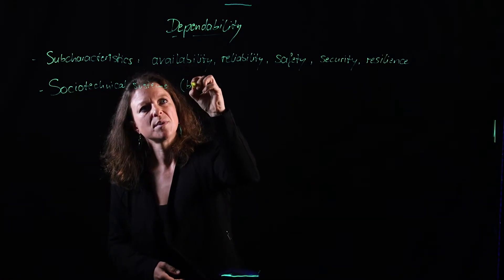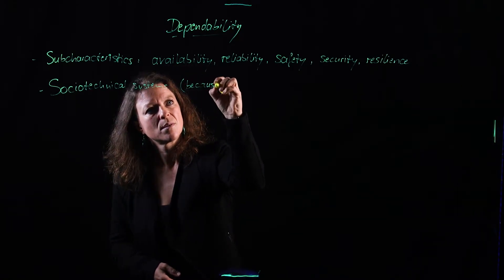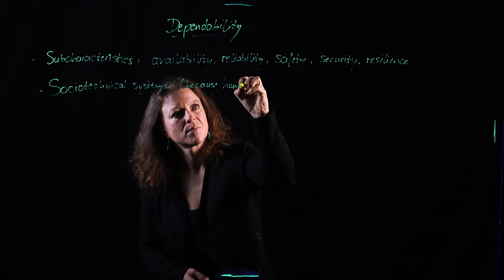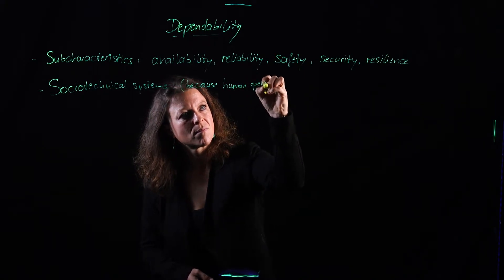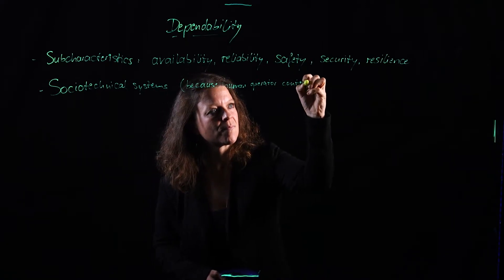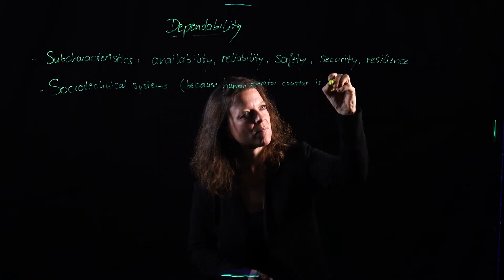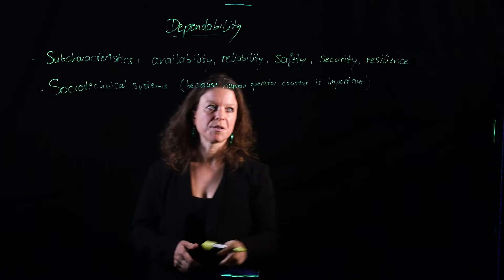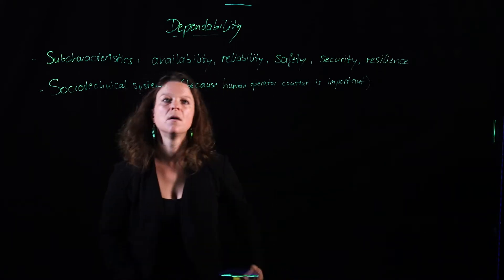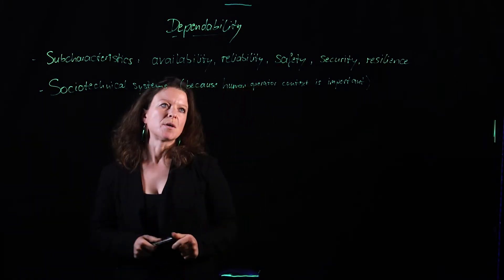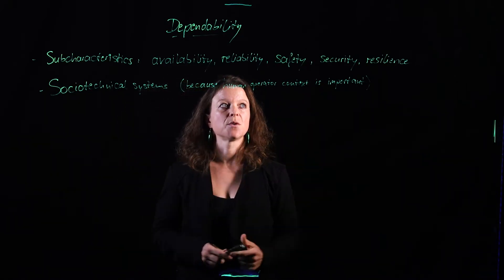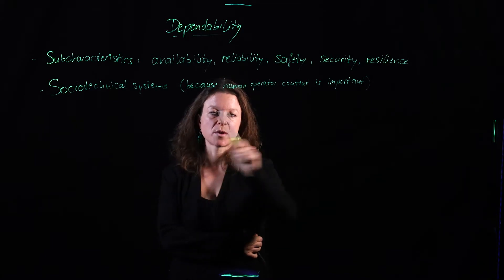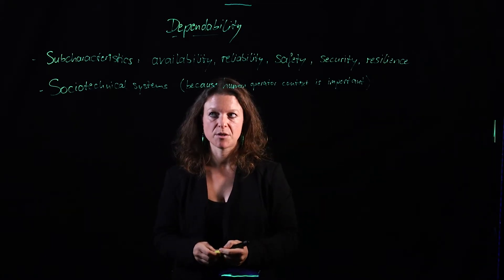The human operator context is important for all these quality characteristics. There are specific methods for how we deal with safety and security and pretty much any of these sub-characteristics, but there are two principles we can use across all of them that will always increase the dependability of our system.